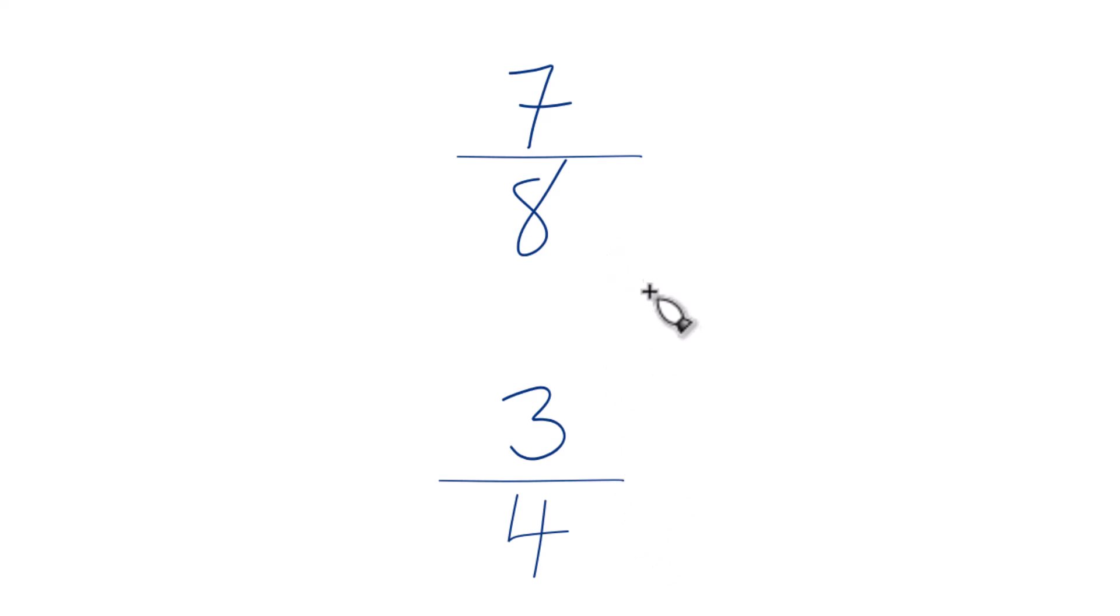Probably your teacher wants you to find a common denominator and then compare the numerators. So we have 8 here and 4 here. So if we can get the denominators to be the same, then we can just compare those numerators and we'll know which is greater, 7 eighths or 3 fourths.